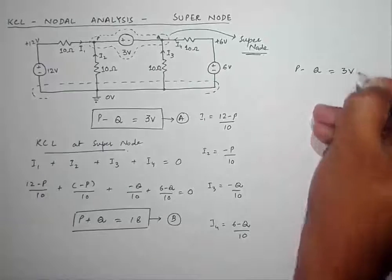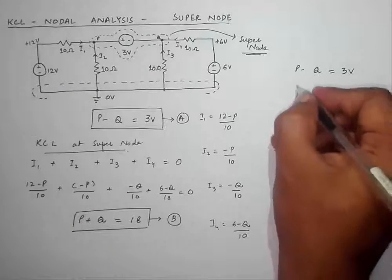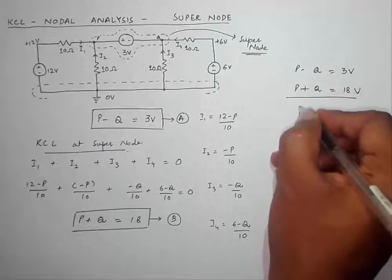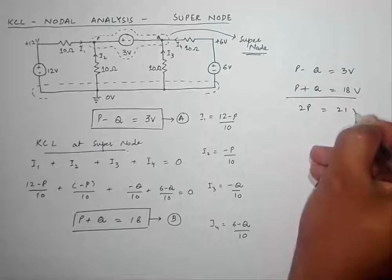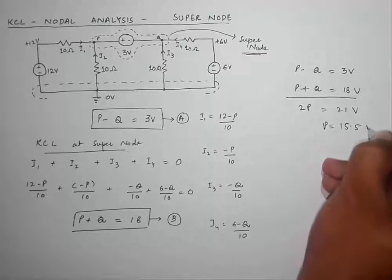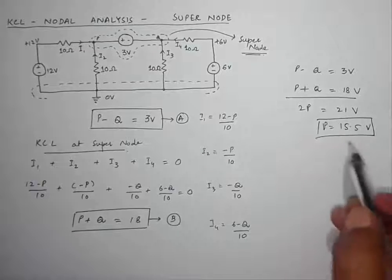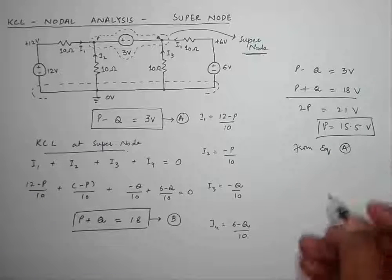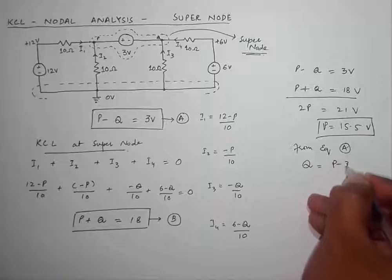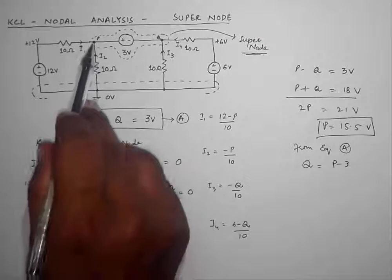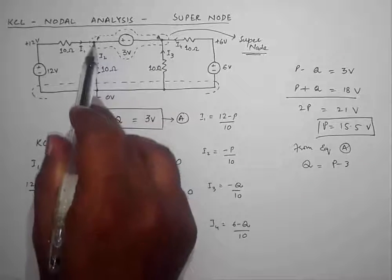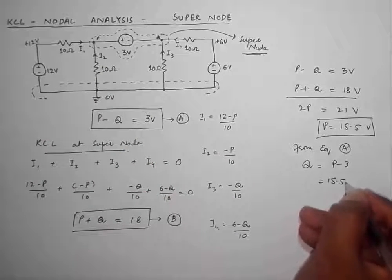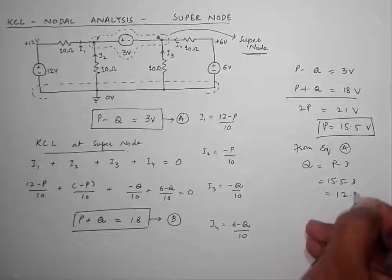Adding equation A (P minus Q = 3) and equation B (P plus Q = 18) gives 2P = 21, so P is equal to 10.5 volts. Now from equation A, Q is equal to P minus 3, so Q is equal to 10.5 minus 3, which gives Q equal to 12.5 volts.